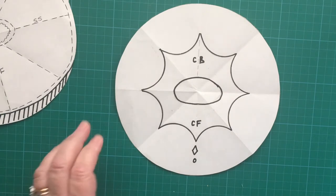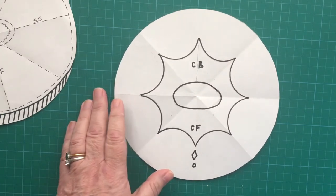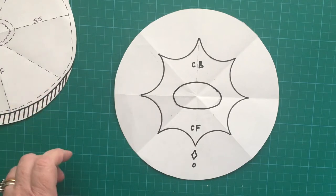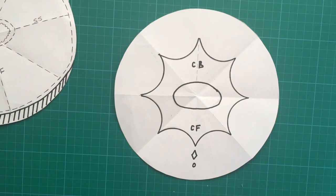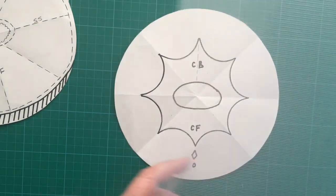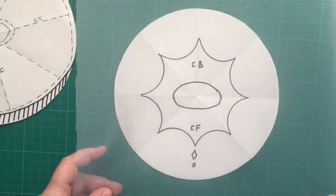Your overlay fabric could be organza, a silk, you could even use your net. Lots of different things, just something very light and delicate.